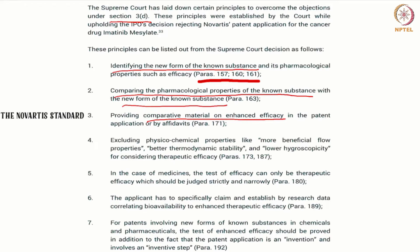The fourth step involves excluding physicochemical properties — like beneficial flow, better thermodynamic stability, and lower hygroscopicity — from the consideration of therapeutic efficacy. The Madras court earlier had interpreted efficacy as therapeutic efficacy, which was also followed by the Supreme Court. In cases of medicine, the test of efficacy can only be therapeutic.